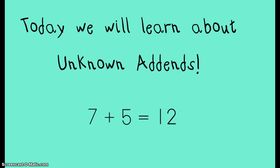If I look at this number sentence it says 7 plus 5 equals 12. Tonight we're going to find out how to figure out what number would go here if the 5 isn't given to us.